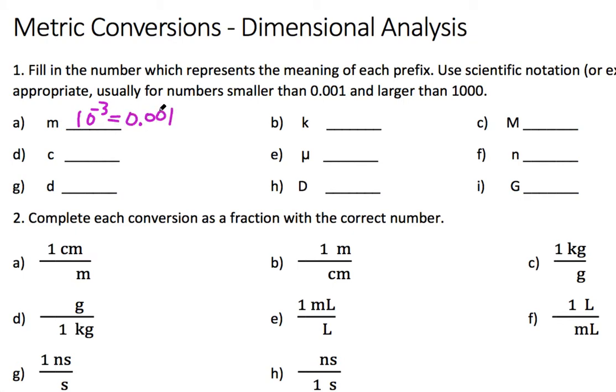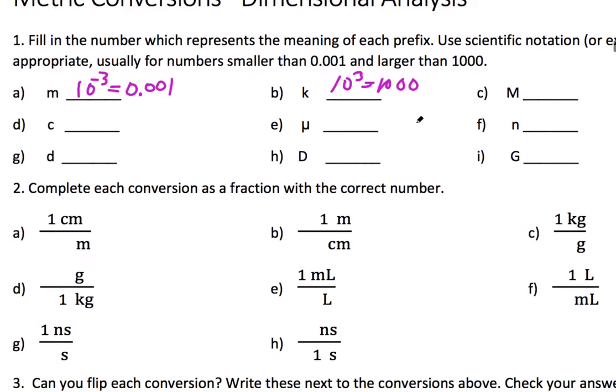Same with big numbers like kilo. Kilo means 10 to the 3. I'm okay with you writing a thousand if you want to, but any more zeros than that and I want you to use scientific notation. All right, so just practice filling in those definitions.